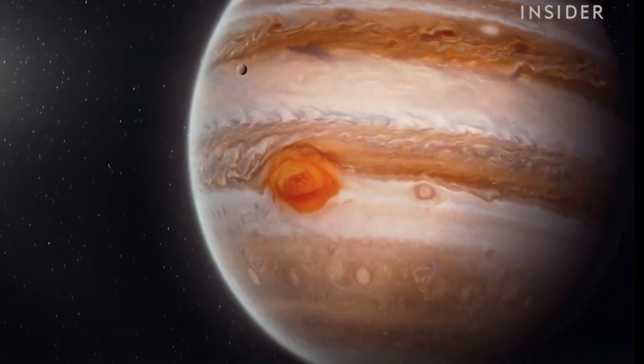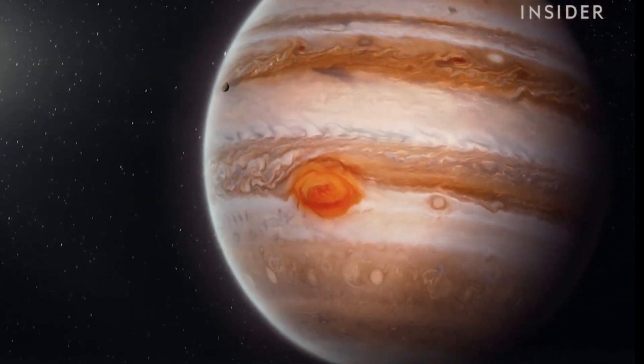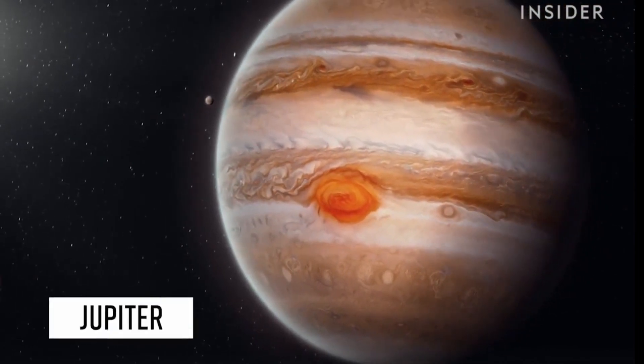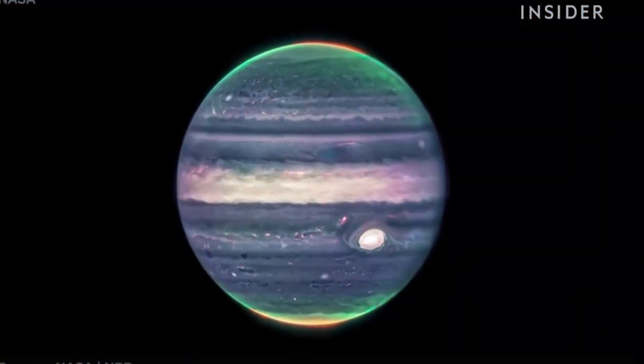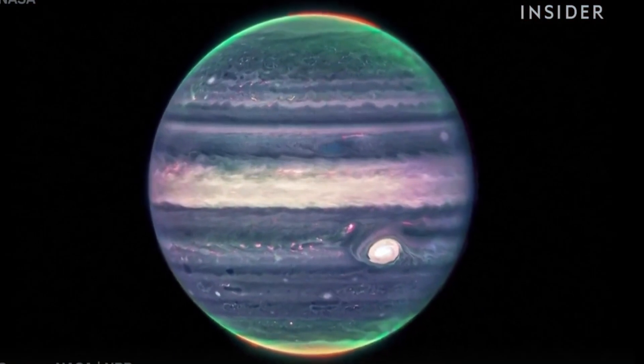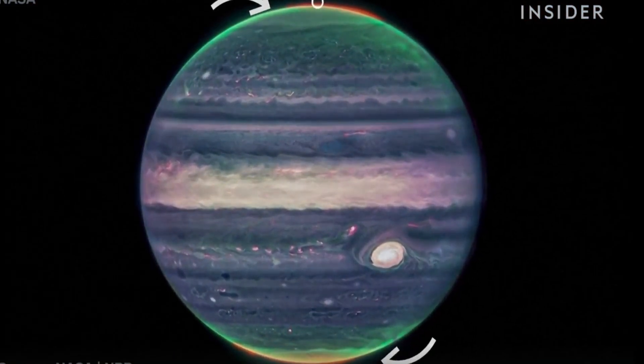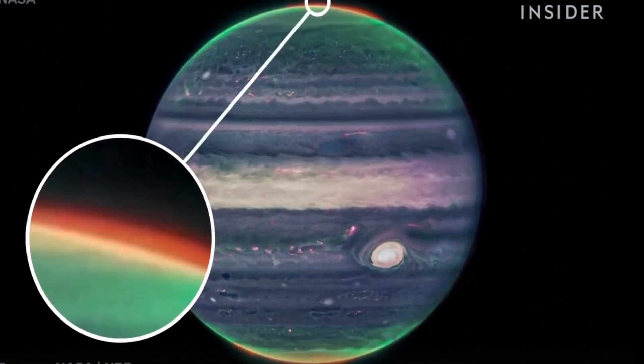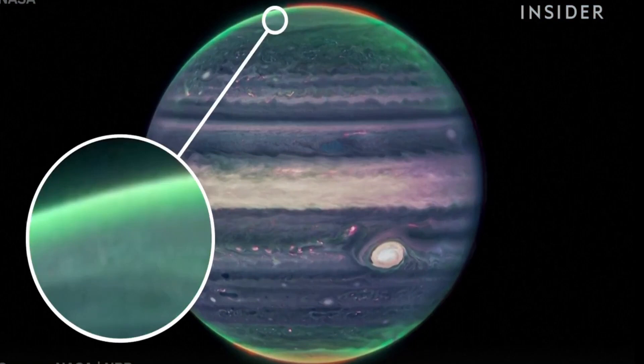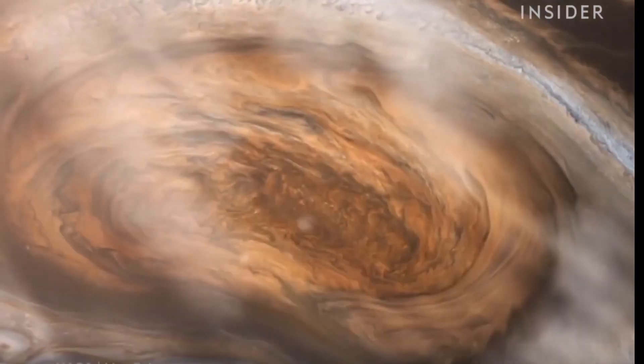The telescope is also uncovering more about the planets we're already familiar with, like Jupiter. This is the clearest image scientists have ever seen of its northern and southern lights, seen in red, of its hazes shown in green and yellow, and of its massive storms.